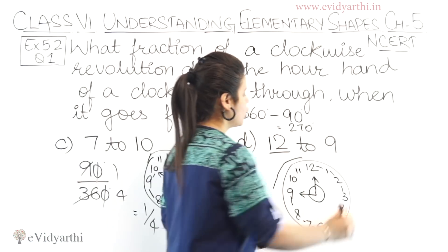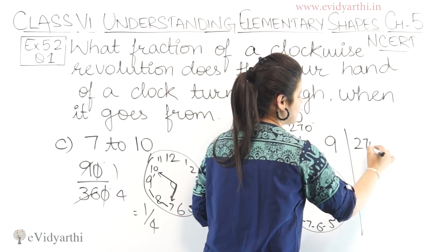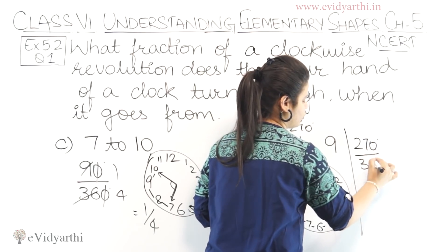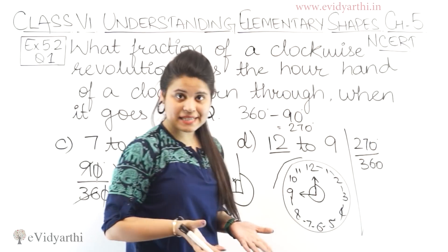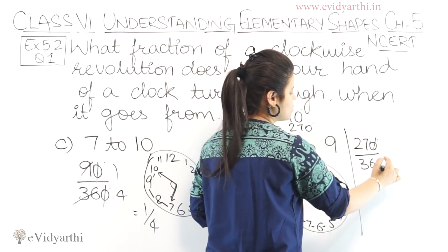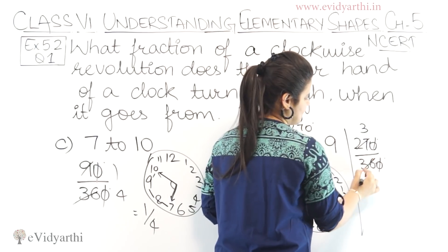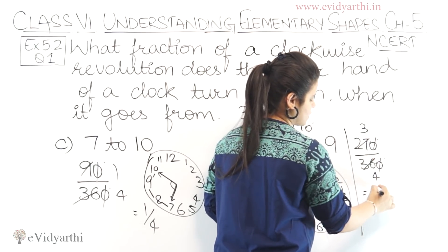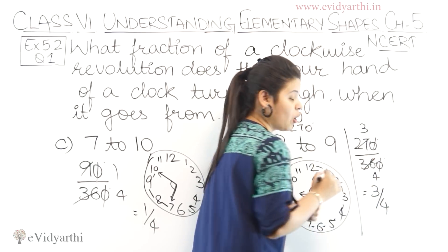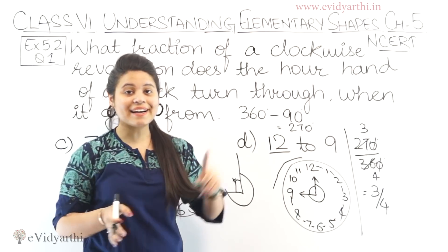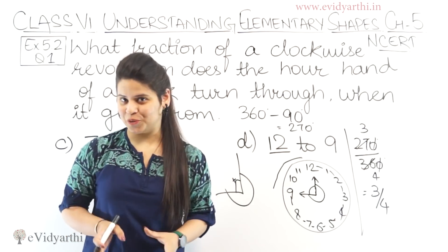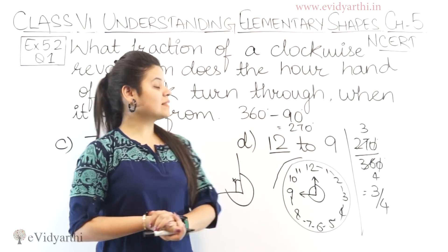Now we find the fraction. So, 270 upon 360. Right? Fraction is found like this. So, zero se zero cancel. Then this will be nine into three, twenty-seven. Nine into four, thirty-six. So, we have three upon four. So, the fraction is three upon four. Okay? So, this was the third and fourth part.